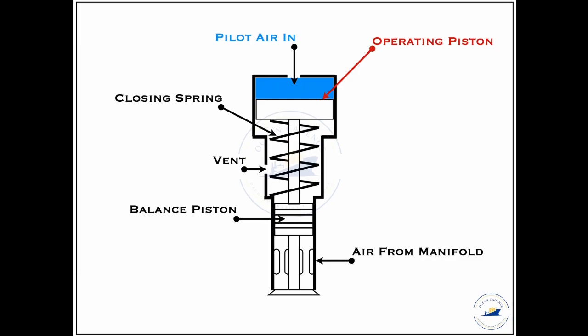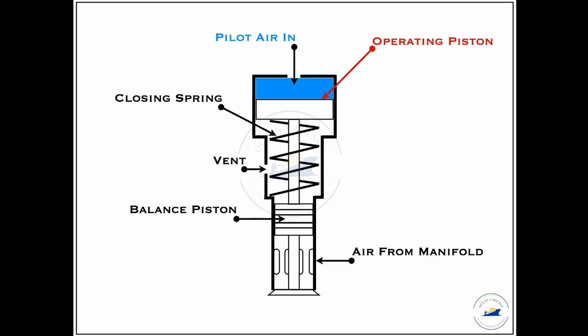That particular pilot air acts on this operating piston, disturbs the equilibrium which has been established in this particular air starting valve unit and presses it down. When it presses it down, this particular valve seat moves down and the air is allowed to flow out.